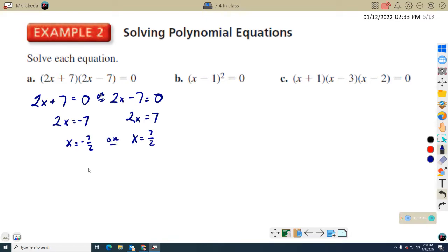So subtracting seven from both sides here, two X equals negative seven. So X equals negative seven halves. Over here I'm going to add seven to both sides. So two X equals seven. So X equals seven halves. In this case, we're going to say, or a negative seven, or just, we'll just call it two separate solutions there.